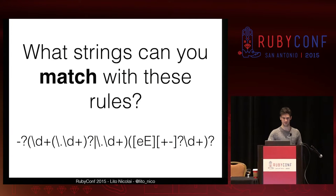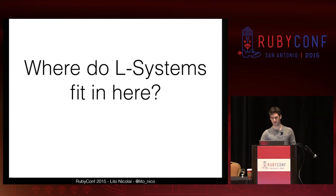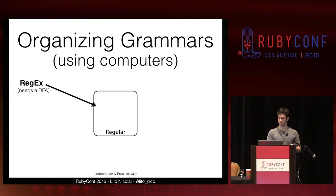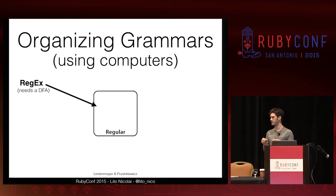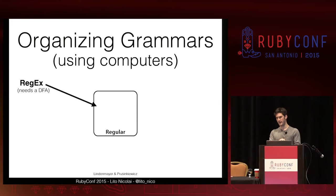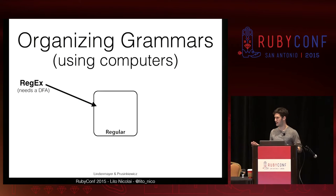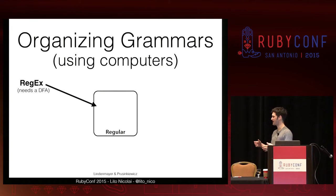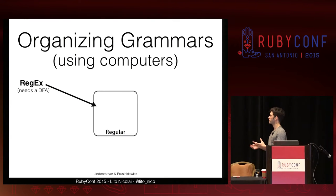When we talk about grammars, it'd be nice to know where L-systems fit and to organize grammars in a broader context. We'll use computers to organize our grammars. We know regular expressions fairly well. To implement regular expressions, the only computer you need is a deterministic finite automaton — a fancy name for a bunch of states and a bunch of transitions. You don't need any memory, no stack or heap. Your computer only has to be the states and the transitions between them. With all of the computers you can make in that structure, you get every regular expression ever — all the sets of strings that can be matched. We call that the regular grammars.